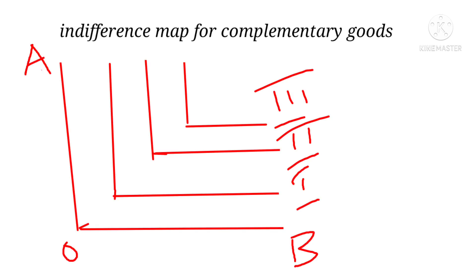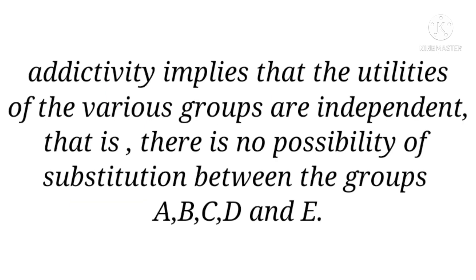This is the indifference map for complementary goods. Additivity implies that the utilities of the various groups are independent. That is, there is no possibility of substitution between the groups A, B, C, D, and E.